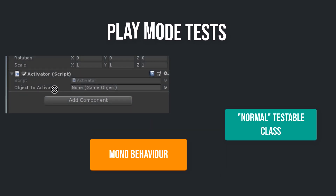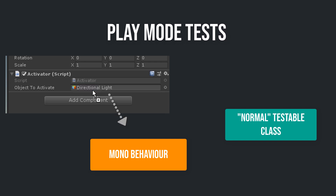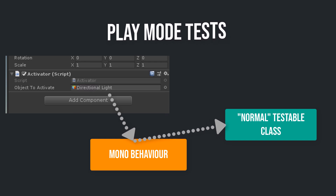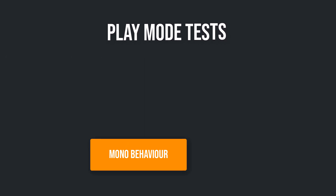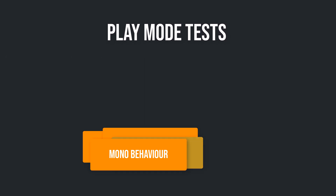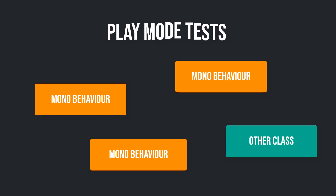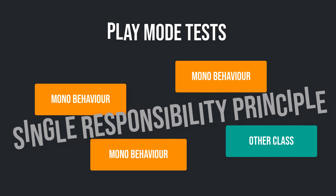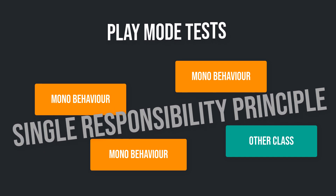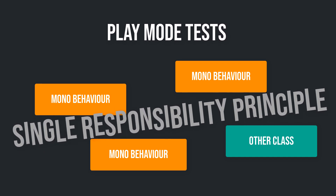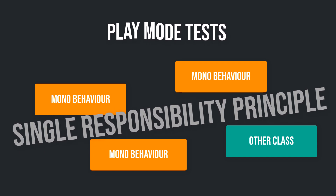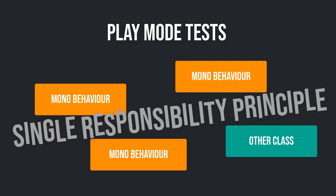In my opinion, in many cases it is too complicated, especially for small MonoBehaviour classes, to create a separate class which is then called by the MonoBehaviour. Also, when you want to graphically configure the components within the Unity editor, you would have to pass the configuration to the other unit testable class. You should structure your code following the single responsibility principle, but separating each MonoBehaviour is overkill in my point of view.